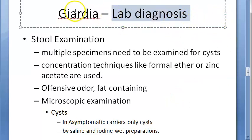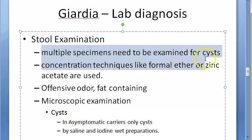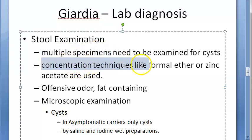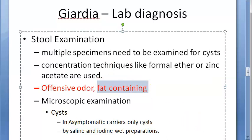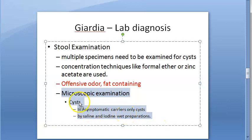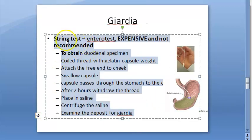For lab diagnosis of Giardia: stool examination is performed. Multiple specimens may be needed. Concentration techniques such as formal ether or zinc acetate are used. The stool has offensive odor and contains fat due to steatorrhea. On microscopic examination you will see cysts - if only cysts are present with no trophozoites, it indicates an asymptomatic carrier. Saline and iodine wet mount preparations are used to observe cysts and trophozoites.